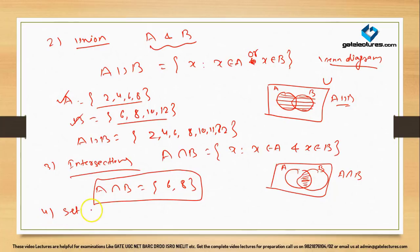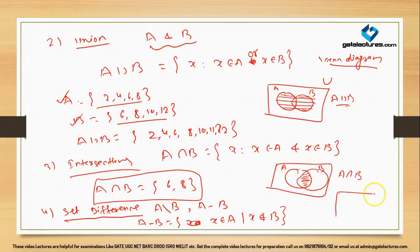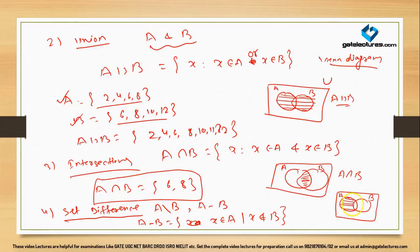Next, the set difference, denoted A − B (or A \ B). A − B = {x | x ∈ A and x ∉ B} — all elements in A that are not in B. In the Venn diagram, A − B is represented by the region of A only, excluding the overlapping part with B.